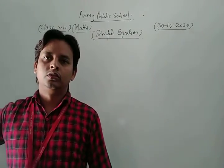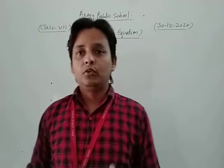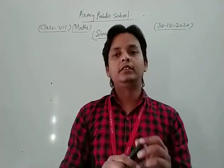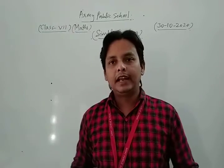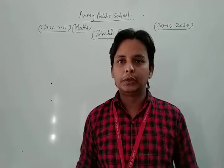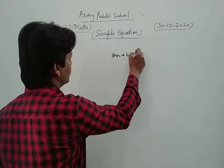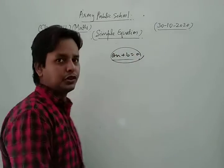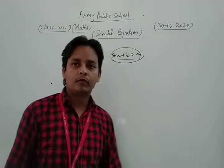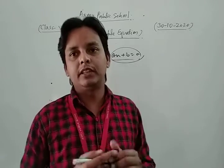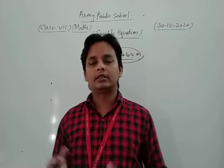First of all, we discuss the concept of a simple equation. Dear friends, the relationship between a variable and a constant, having some equality sign, is known as a simple equation. For example, if we write ax plus b is equal to 0, this is a form of an equation in one variable, where a and b are real numbers and x is the variable. So, the relationship between variables and constants having some algebraic operation with an equality sign is known as an equation.